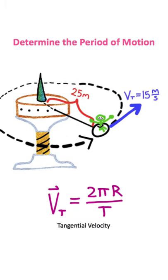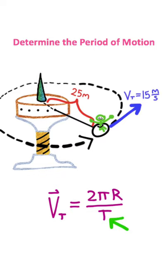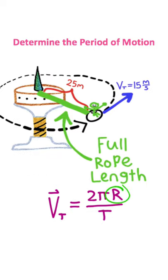What I'm going to use is this equation, which is tangential velocity equals the circumference of a circle over the period of motion. Now notice right here how the length of this rod is acting as the radius of our circle.